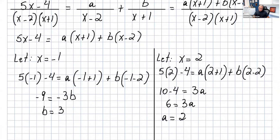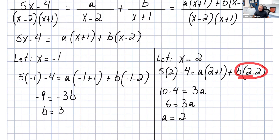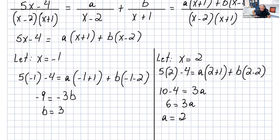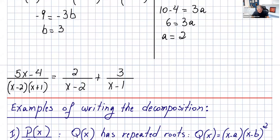Now you're looking for an x that makes the b term zero, so let x equals 2. Substituting gives 5 times 2 minus 4 on the left equals a times 2 plus 1 plus b times 2 minus 2. That b term is 0, so you get 3a equals 10 minus 4, and solving gives a equals 2. That's another way of solving this if you don't want to write the system. We got the same answer.